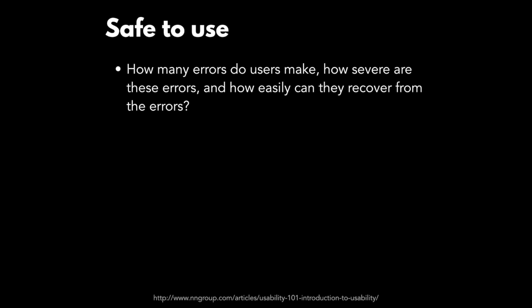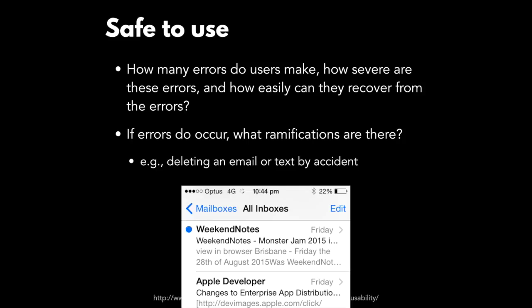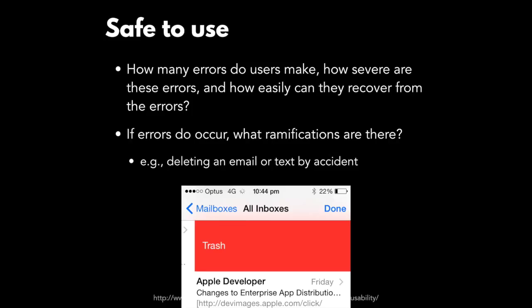Your app should be safe to use — meaning: how many errors do users make, how severe are these errors, and how easily can they recover from them? If errors do occur, what ramifications are there? For example, deleting an email or a text by accident — if we accidentally swipe too far across when deleting an email, what effect will that have on our users?